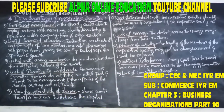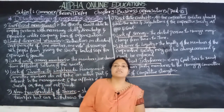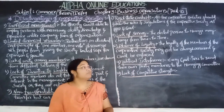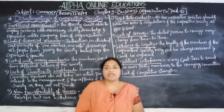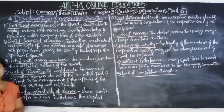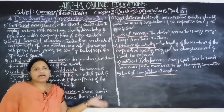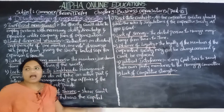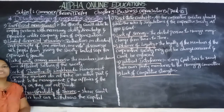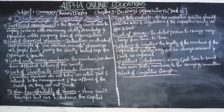Welcome to online education, commerce theory for English medium first years. The chapter we are dealing with is business organization, part 10. Here we are going to discuss the disadvantages of cooperative societies. We have seen the meaning, definition, features, and advantages, and now we are going to discuss the disadvantages of cooperative societies. Let us see one by one what the disadvantages are in detail.